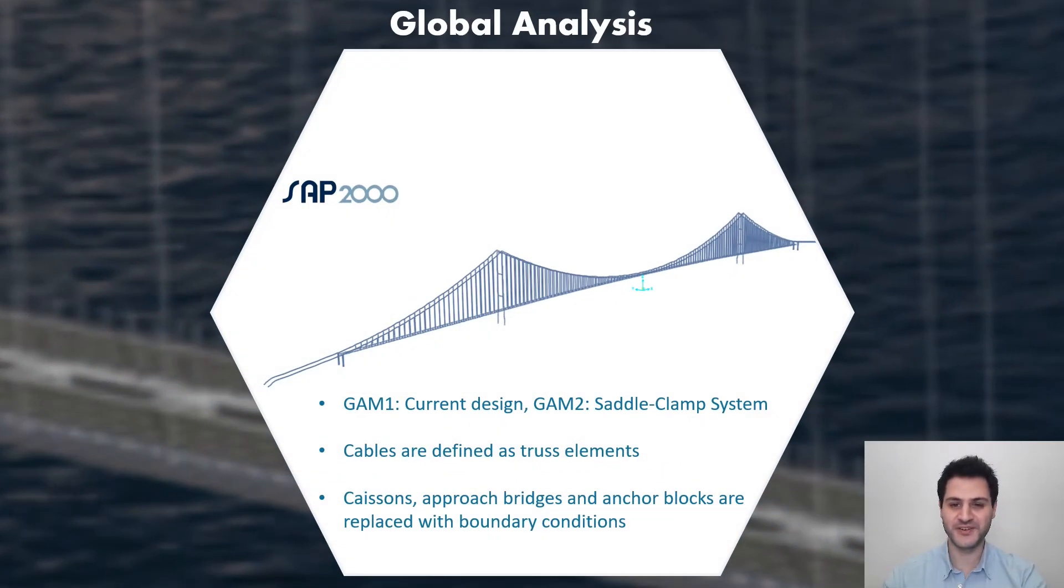Two different Global Analysis Models are created on SAP2000. The first one reflects the current design and the second one corresponds to cable configuration of saddle clamp system. For both models, structural elements are defined with exact stiffness and geometry. Cables of the structure are defined as truss elements with corresponding releases. Geometry defined in Global Analysis is the reference condition and it is the phase of the structure exposed to dead loads. Hence, design loads of the cable structures are taken from envelopes of linear static load cases combinations. However, in the modal analysis, stiffness of the structure at the end of non-linear case of dead loads with large displacements is used.